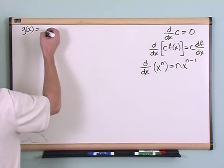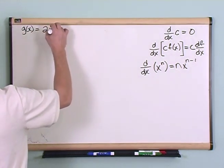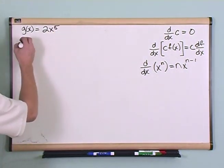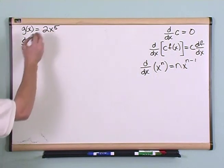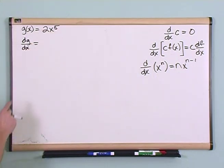If g of x is equal to two times x to the five power, then dg dx, the derivative of g with respect to x, is going to be,